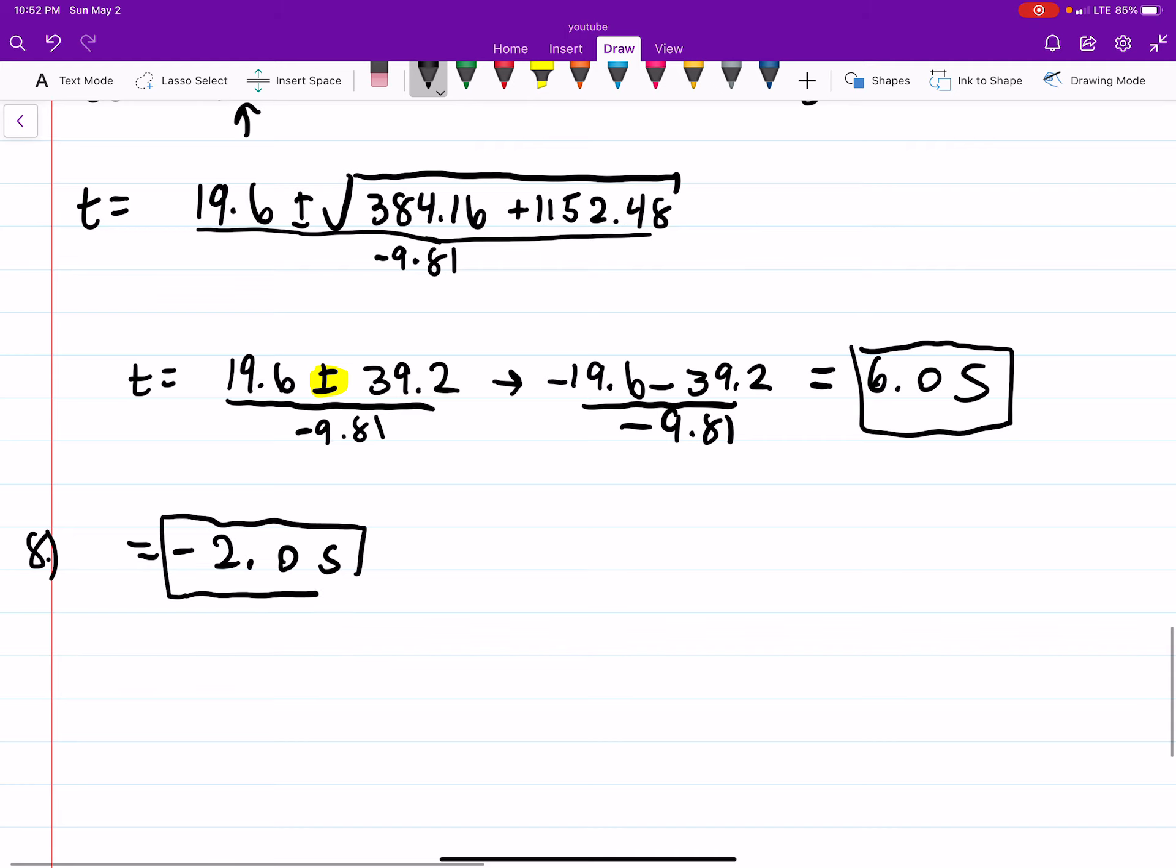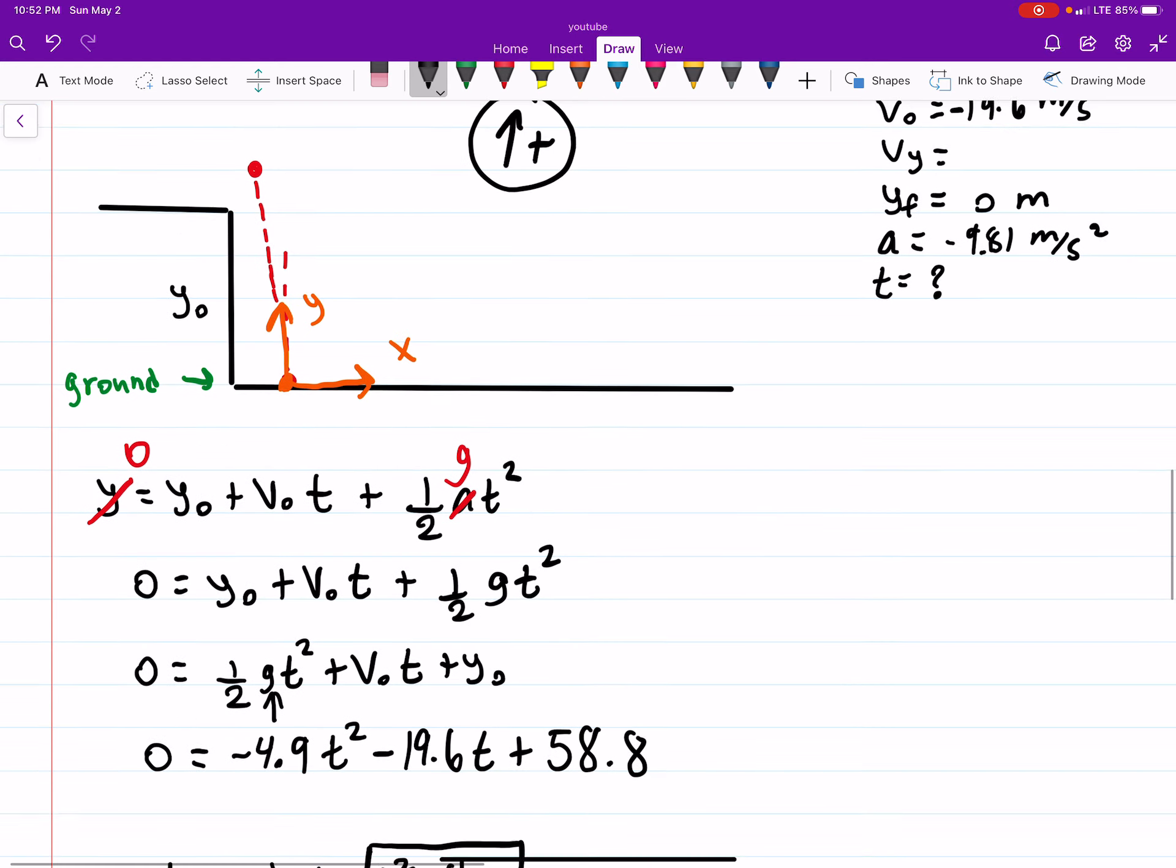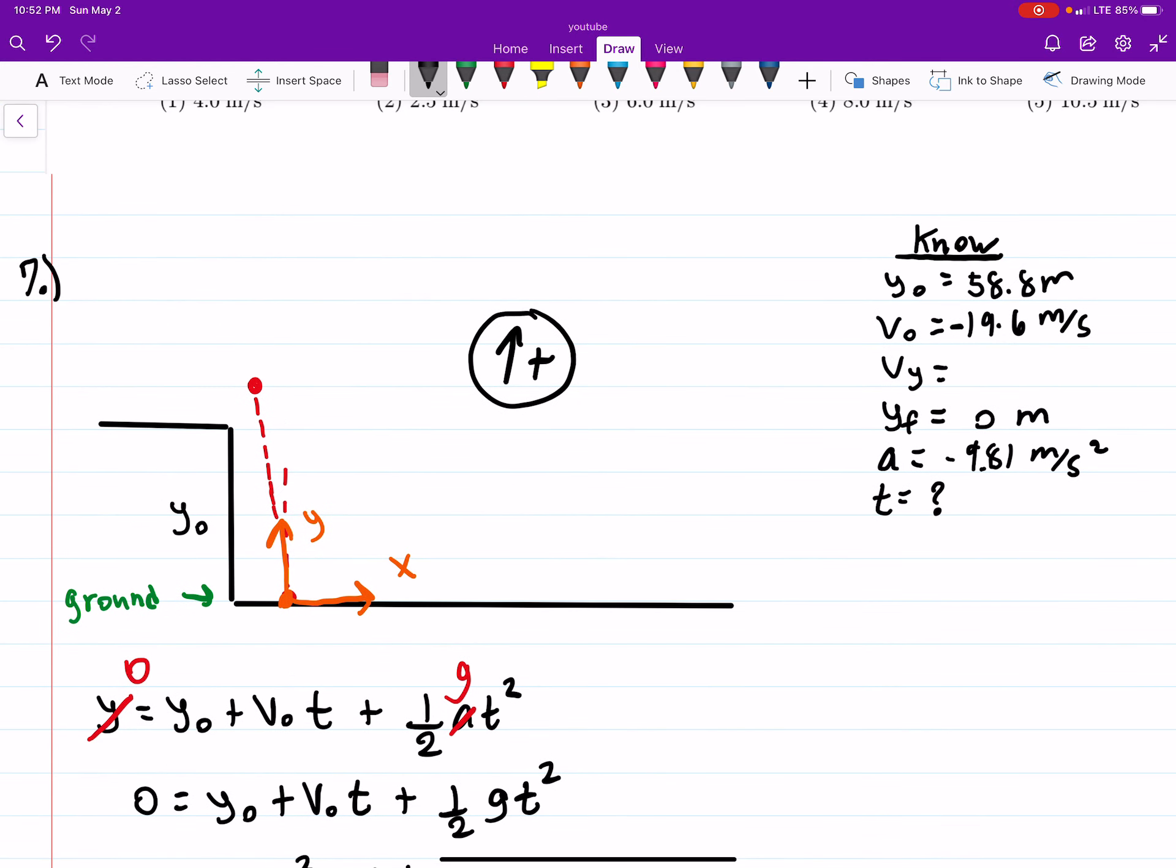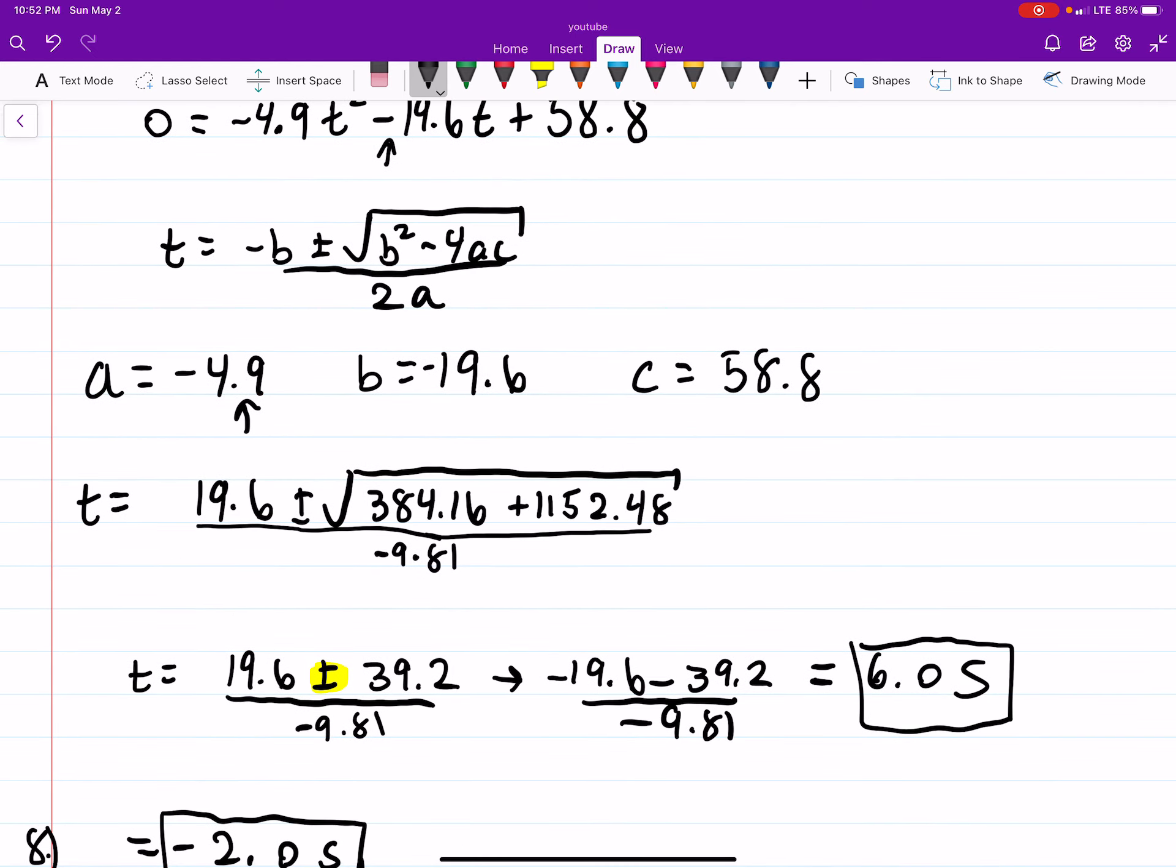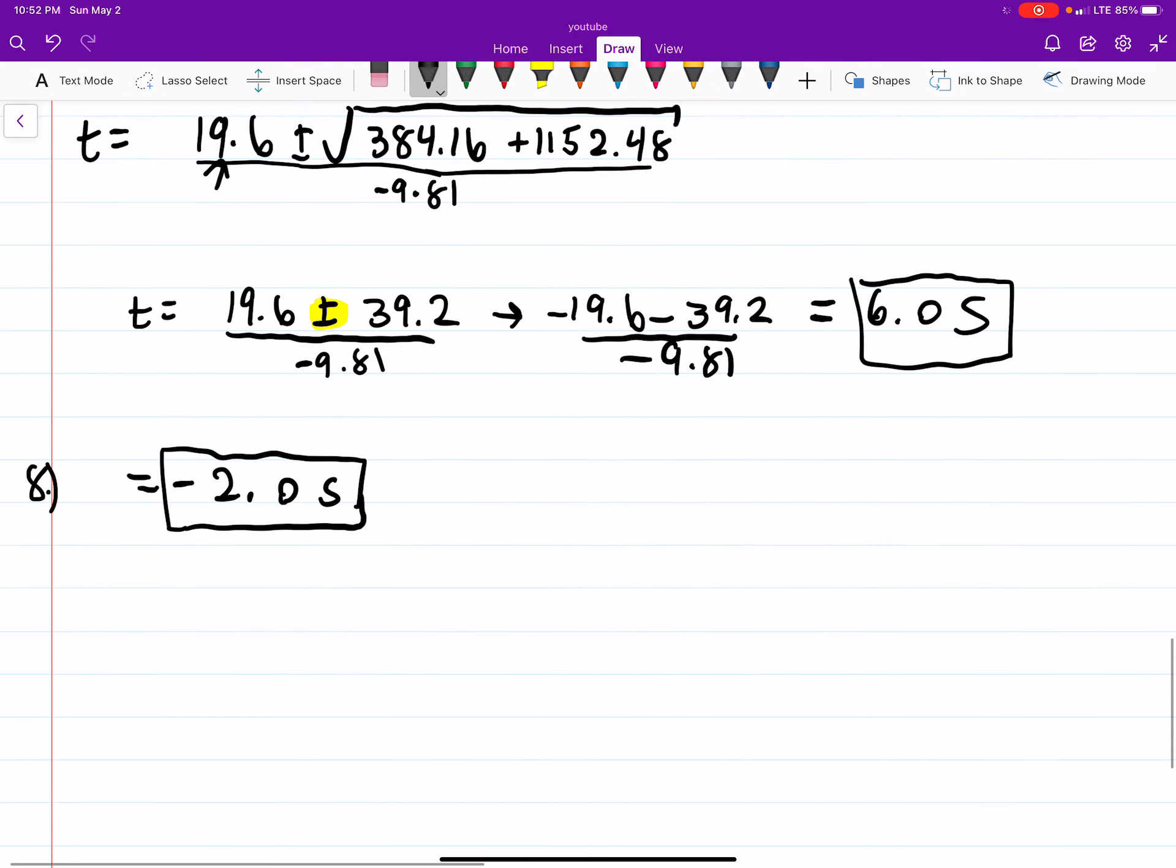So like I said, the only thing that changes there is the sign for our velocity. So that changes which changes this, which changes this. And that's it. Nothing too crazy there. This will turn into a positive. So hopefully that makes sense.